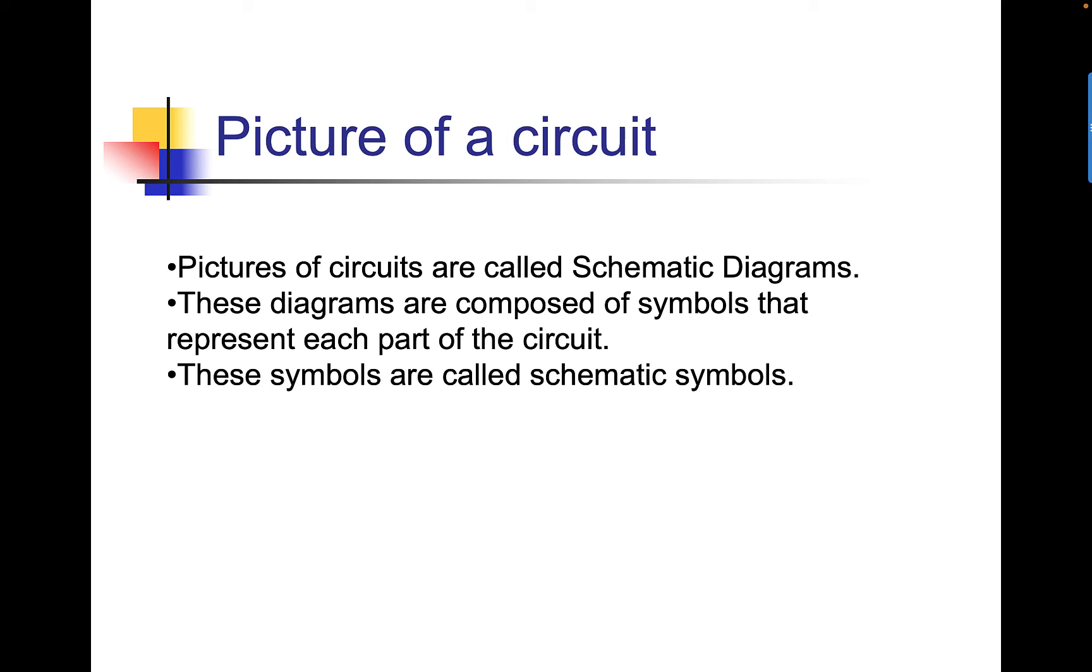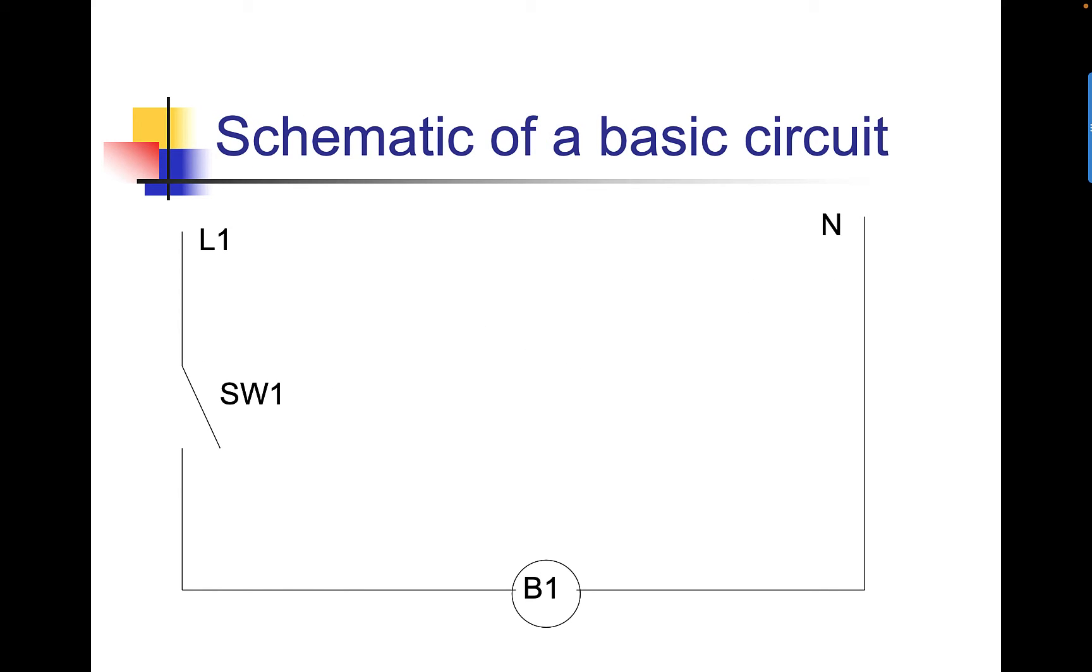Pictures of circuits are called schematic diagrams. These diagrams are composed of symbols that represent each part of the circuit. These symbols are called schematic symbols. This is the schematic symbol of a basic circuit. We have L1 and N, which tells us this is a 120-volt circuit. We have a switch.